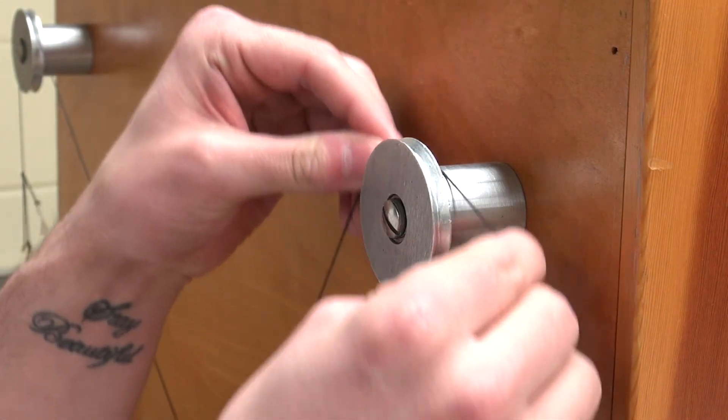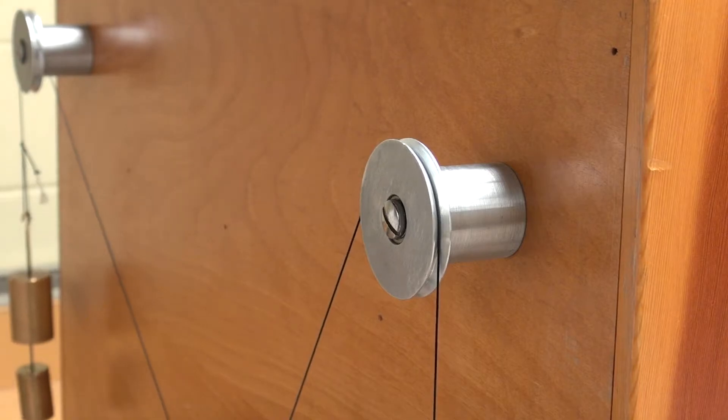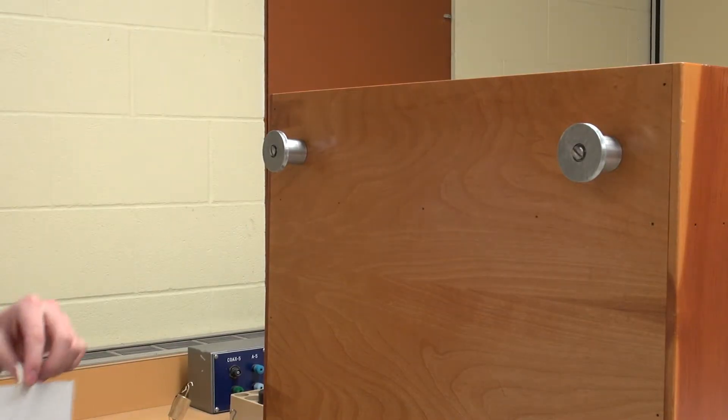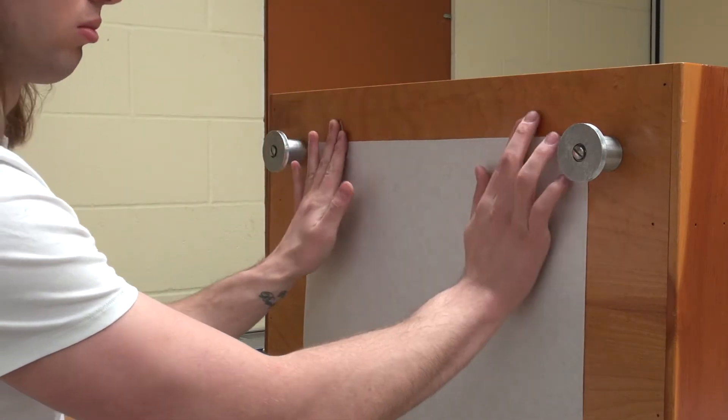As was done in lab M3, you need to ensure that the string is sitting in the grooves on the pulleys. Attach the paper so that it is between the pulley supports, with the top of the sheet roughly at the top of the pulleys.